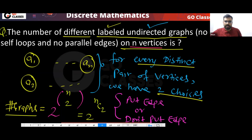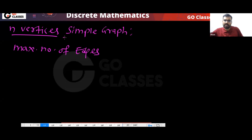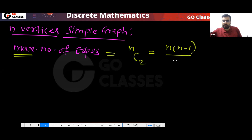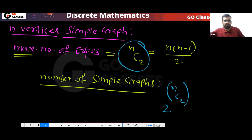So the answer will be 2 power nC2. If you have n vertices in a simple undirected graph, then the maximum number of edges is nC2, which equals n(n-1)/2 — this is the number of edges in a complete graph. The number of simple graphs you can create is 2 power nC2, because for every possible edge you have 2 choices: either take it or don't take it. The n vertices are already fixed.